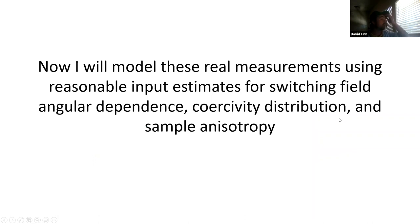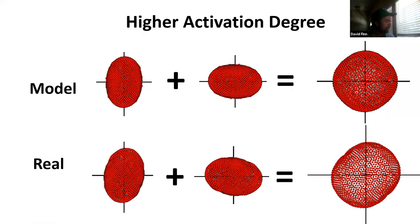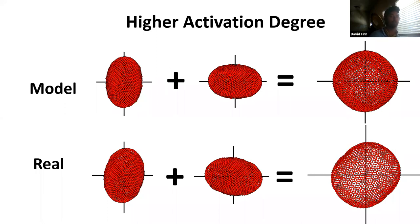While 122 directions is a lot, the shape is still easier to see if I interpolate and create 2000 directions. Now I'm going to model these real measurements using reasonable input estimates for switching field angular dependence, coercivity distribution, and sample anisotropy. The model uses the exact same measurement routines as the Sushi Bar. In the experiment where the ARM was closer to being fully activating, the anisotropy shape in both measured and modeled cases is nearly ellipsoidal. Rotating the shape and adding it back to itself also yields a nearly ellipsoidal result, meaning this routine is close to being suitable for tensor analysis but poorly designed for measuring higher-order anisotropy shapes.